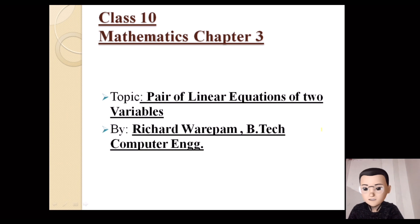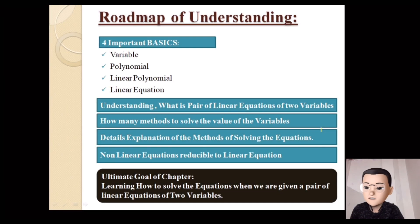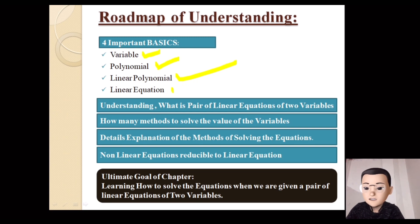I'll go to Class 10 Mathematics, Chapter 3. The topic is Pair of Linear Equations of Two Variables. In this chapter, there is a road map. There are four basics in this chapter: variables and polynomials, linear polynomials and linear equations, and a pair of linear equations of two variables.